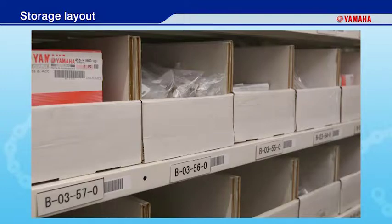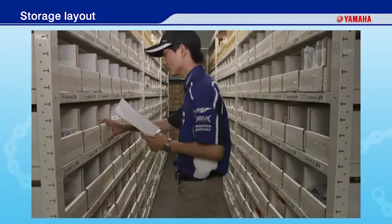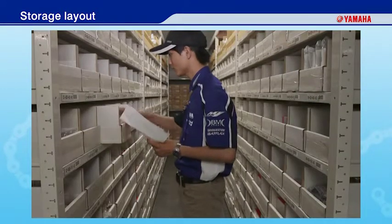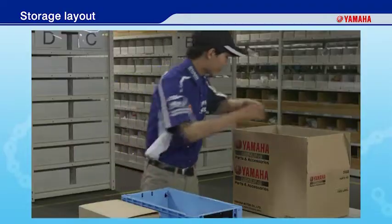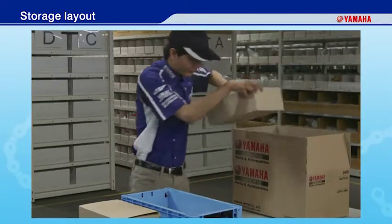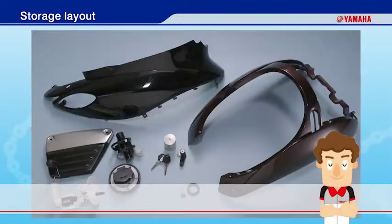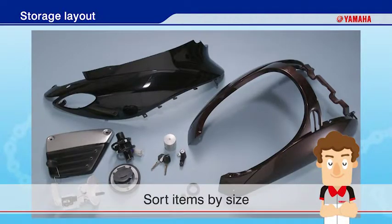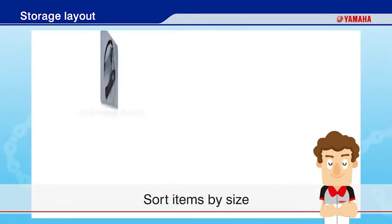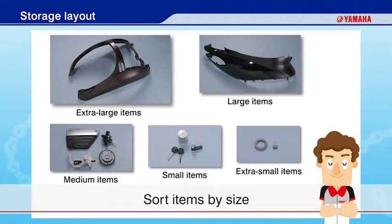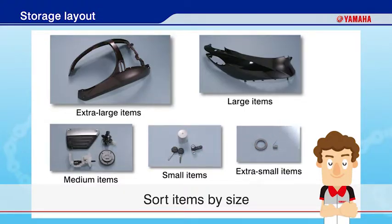Optimizing your parts storage layout can improve operation accuracy, productivity, and workability. First, sort the items you plan to stock by size. You should sort each item into one of five sizes: extra large, large, medium, small, and extra small.